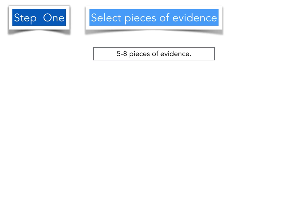It's important that you select pieces of evidence that represent your practice over a period of one to two years. In total, you will only need five to eight pieces of evidence, and this evidence should be a snapshot of your teaching practice. You don't need to submit everything — you just need to find those strong pieces of evidence that are going to help you satisfy a range of standard descriptors.